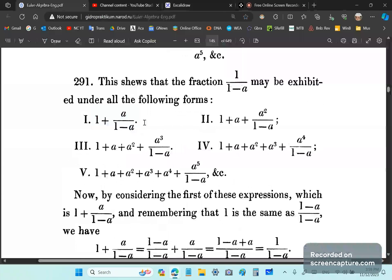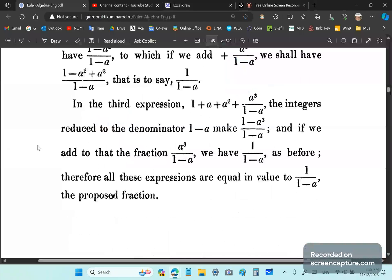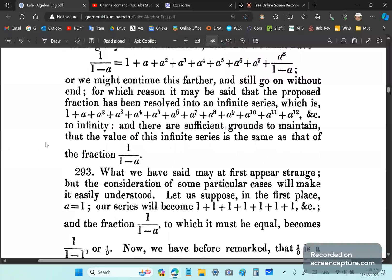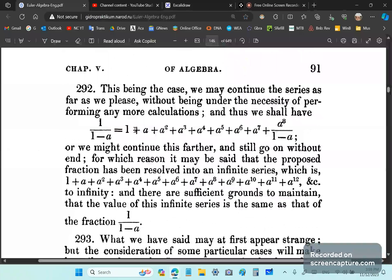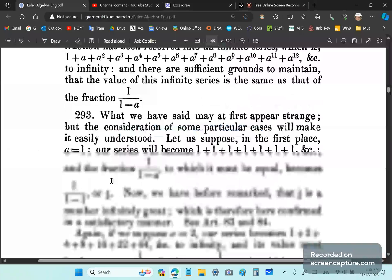And it doesn't matter what the value of a is. If you put a in here, it will equal to this value if you put a in here. It doesn't have to be between minus 1 and 1. It can be any particular number you like. Do you understand that? All right. So, Euler does something very stupid.